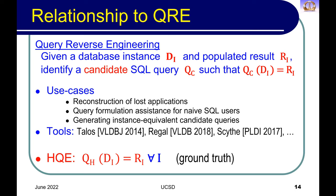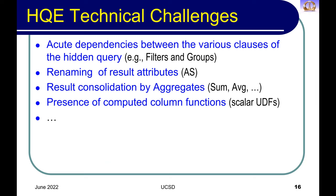Some of you who have been looking at papers in the query reverse engineering field — which has seen a lot of traction over the last decade, with work from Divesh Srivastava at AT&T Labs and Chong Chan in Singapore — may wonder how this differs. In query reverse engineering, you are given a database instance and a result output, and you find some candidate SQL query that connects these two for that specific instance. But in our case, we actually have a ground truth in the application. We know there's a precise query which must produce the correct results for any database — not just for a specific instance.